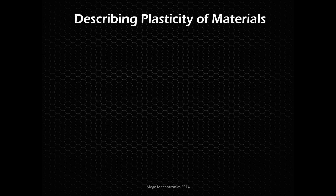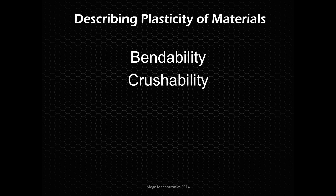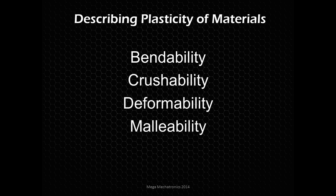Speaking of ductility, we're describing the plasticity of materials — the ability for that material to plastically deform, to permanently deform. Some terms related to the plasticity of material: bendability, crushability, deformability, malleability, and ductility, of course.